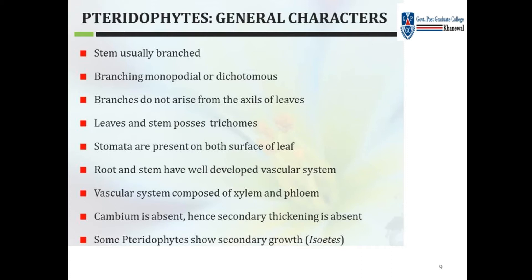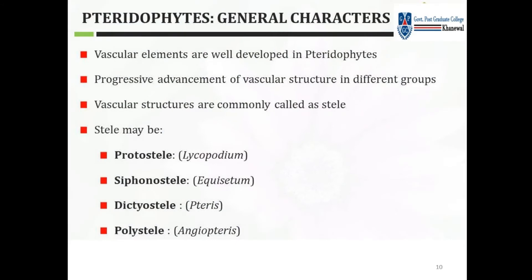Although cambium is absent, some Tracheophytes do show secondary growth. Vascular elements are well developed in Tracheophytes with progressive advancement of vascular structure in different groups. The vascular structures are commonly called the stele — which may be protostele as in Lycopodium, siphonostele as in Equisetum, dictyostele as in Pteris, or polystele as in Adiantum Pteris.